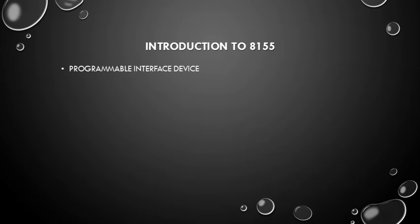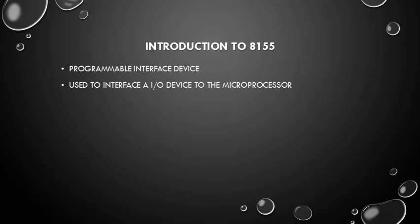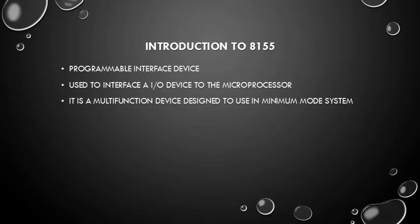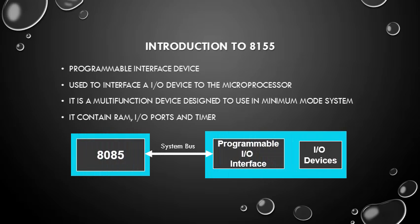Introduction to 8155: it is a programmable interface device used to interface input/output devices to the microprocessor. It is a multi-function device designed to use in minimum mode systems. It contains RAM, input/output ports, and a timer. You can see the flow diagram of 8155 with 8085.